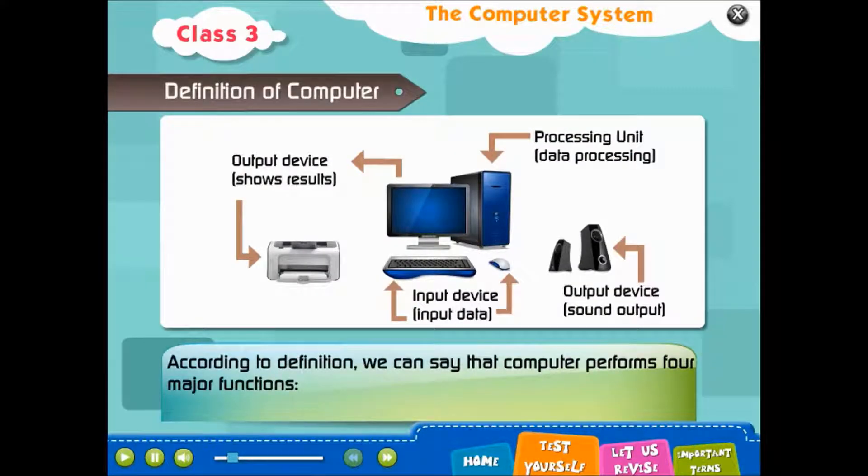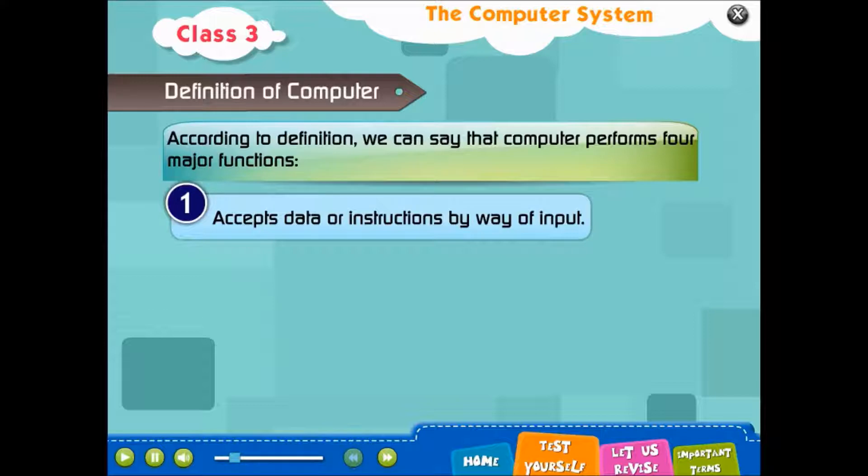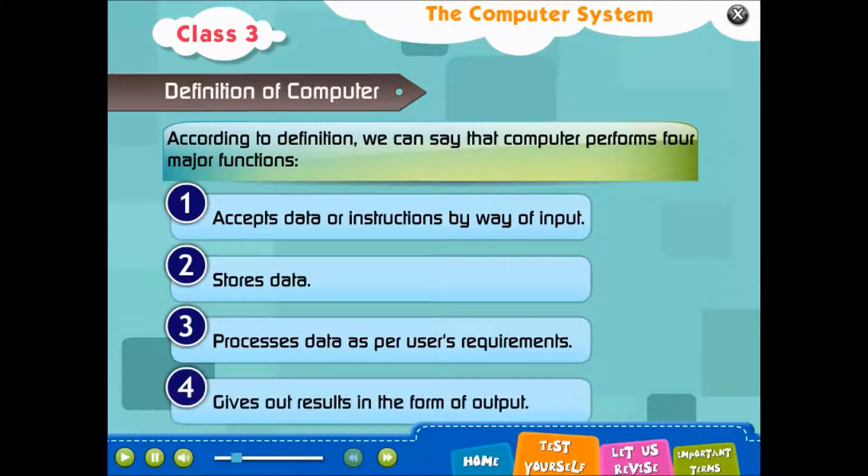According to definition, we can say that computer performs four major functions. 1. Accepts data or instructions by way of input. 2. Stores data. 3. Processes data as per user's requirement. And 4. Gives out results in the form of output.